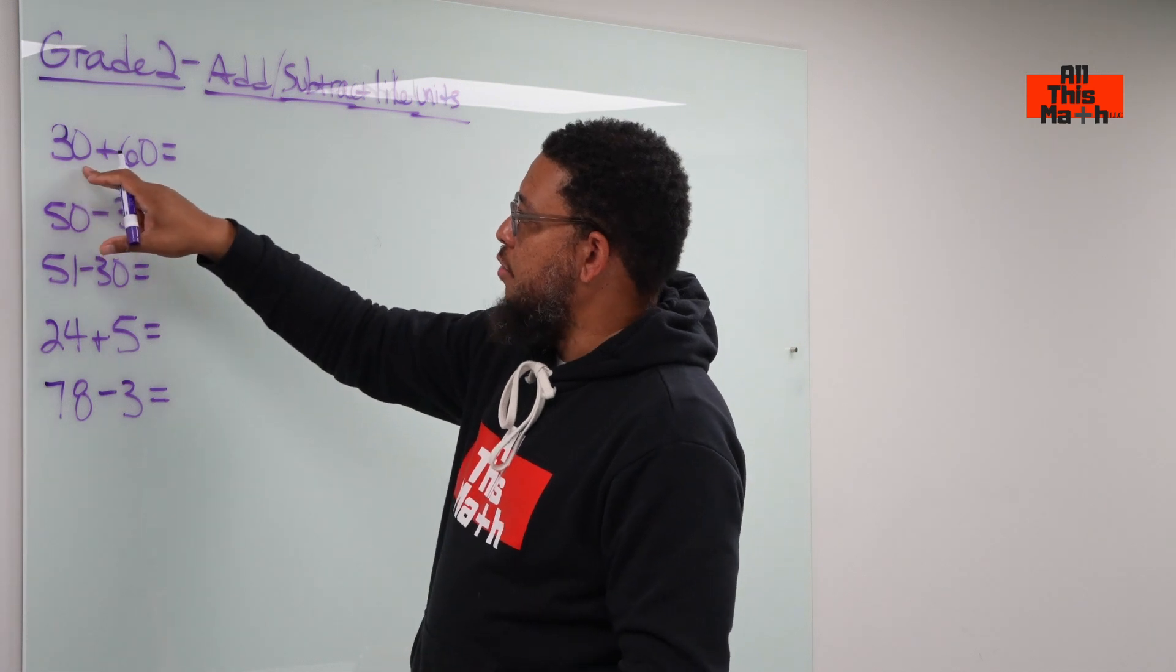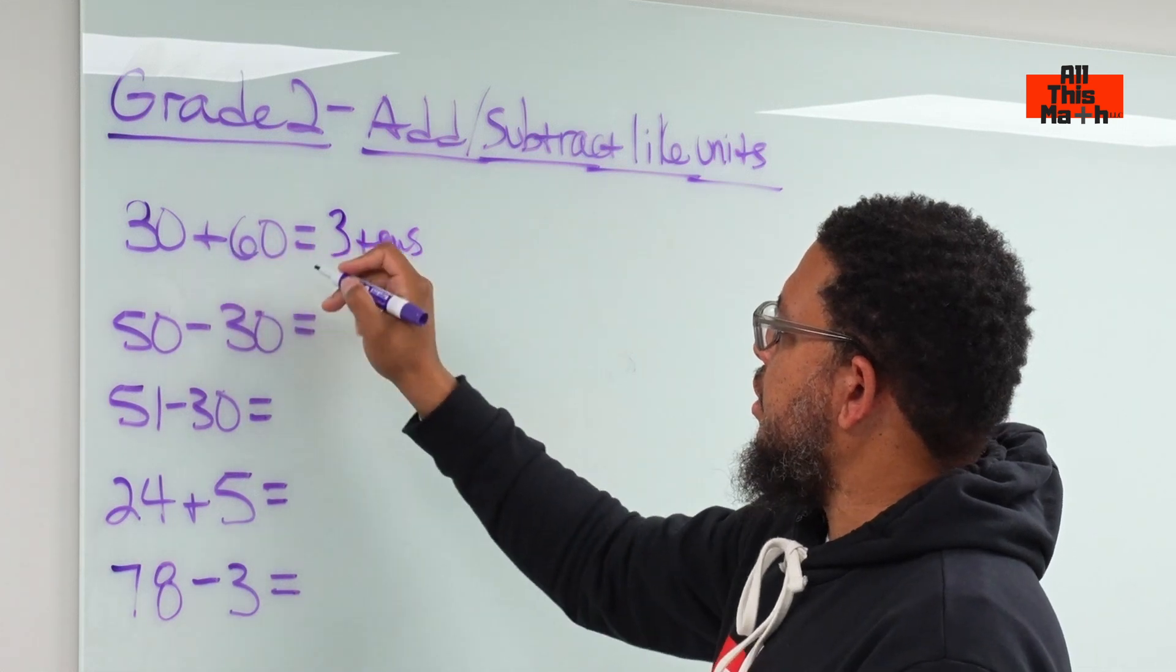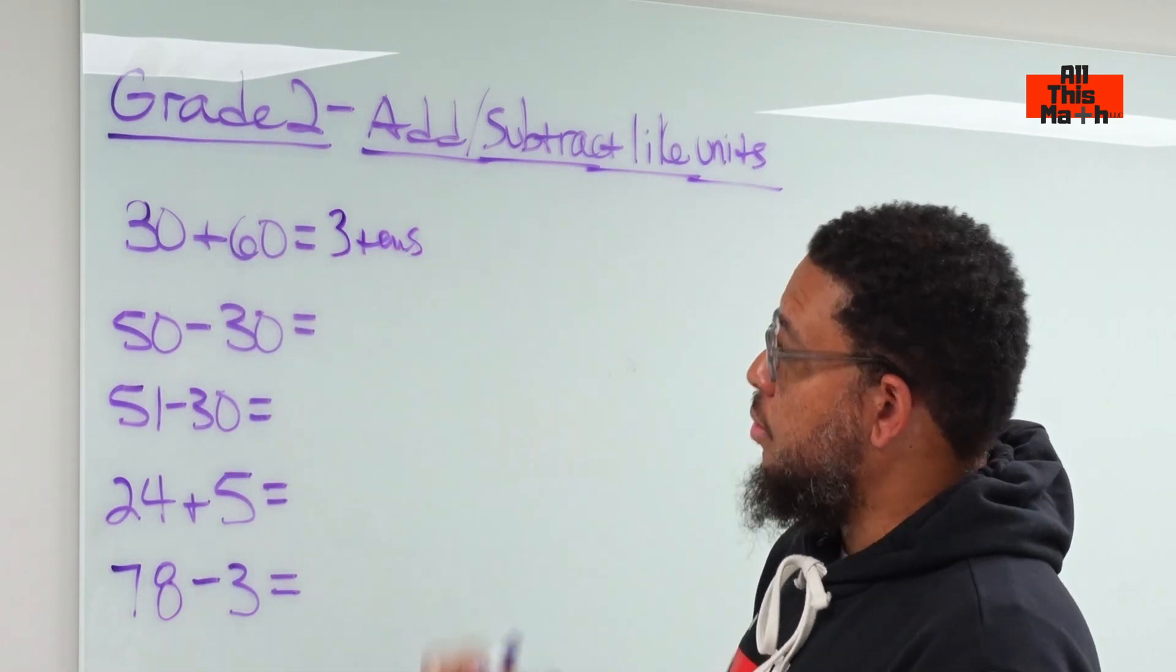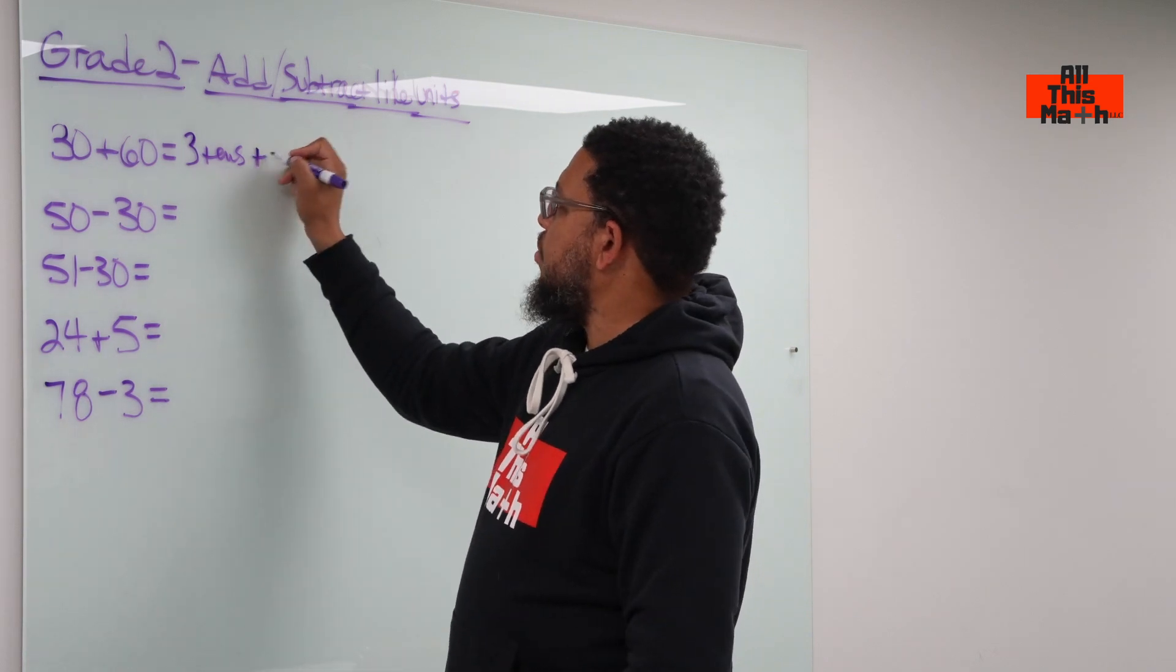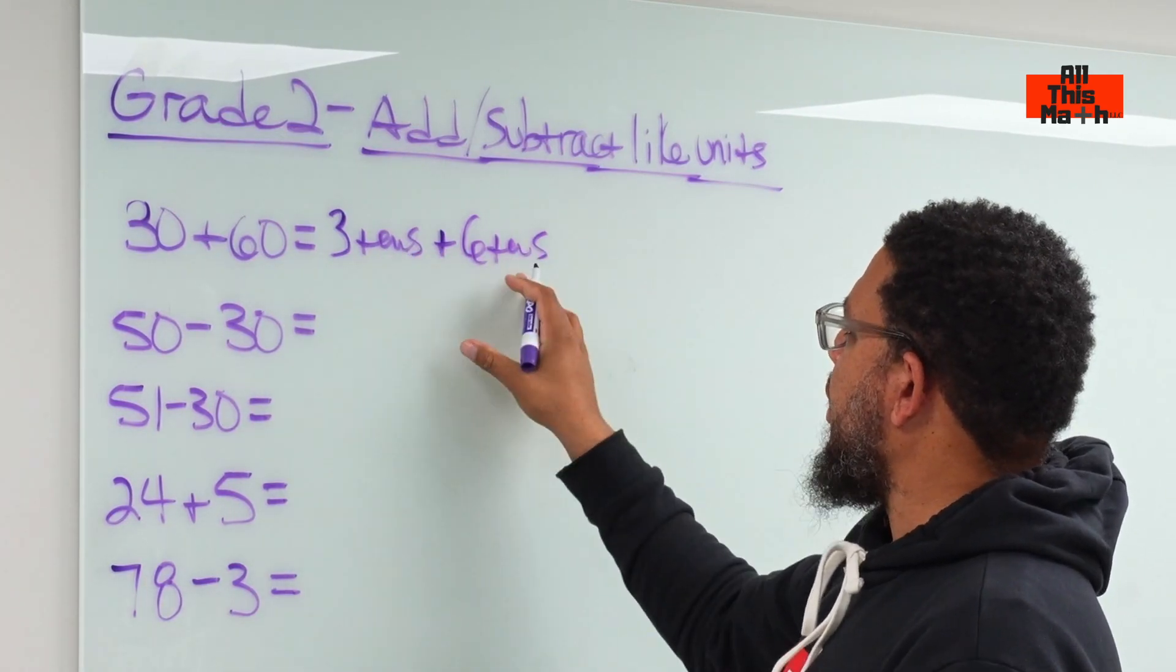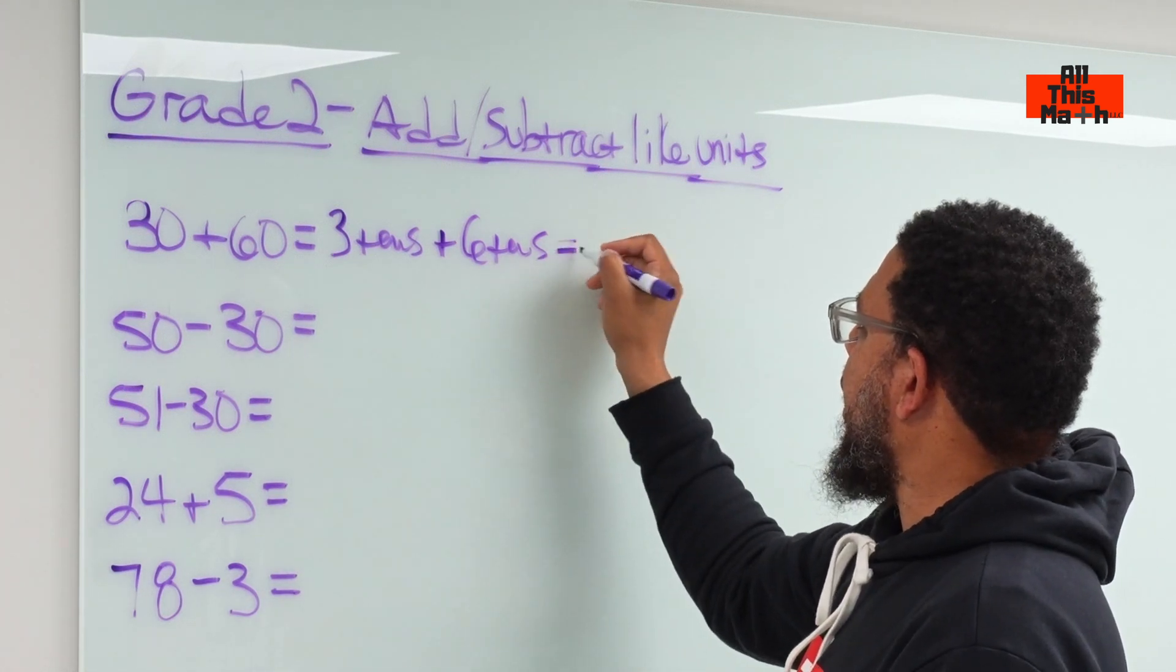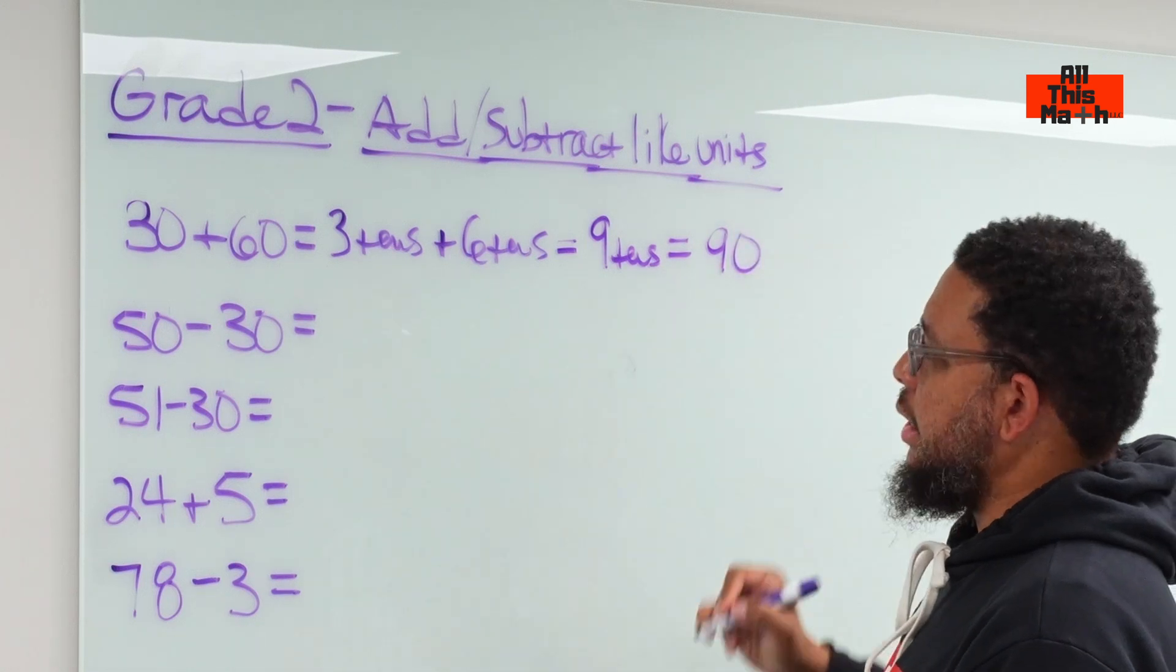So how many tens do we have here? 30 is three tens, and then we have six tens because 60 is six tens—almost like six $10 bills is 60. So three tens plus six tens. These are like terms. We add them together, which gives us nine tens, and nine tens equals 90.